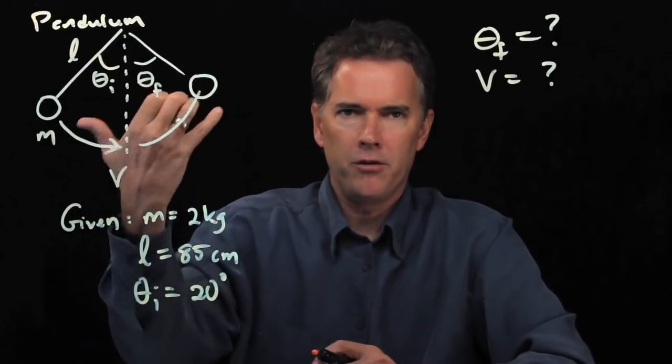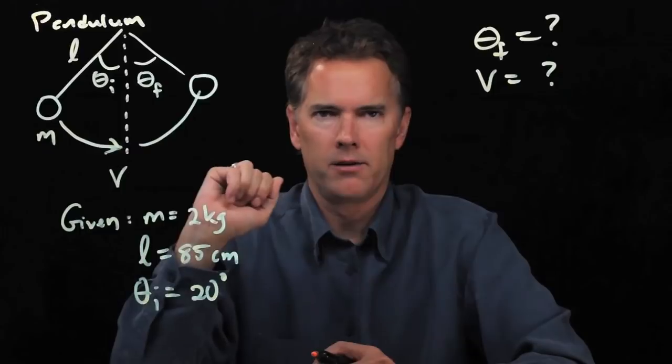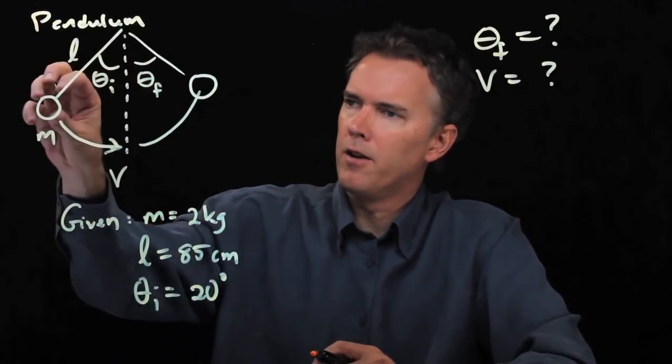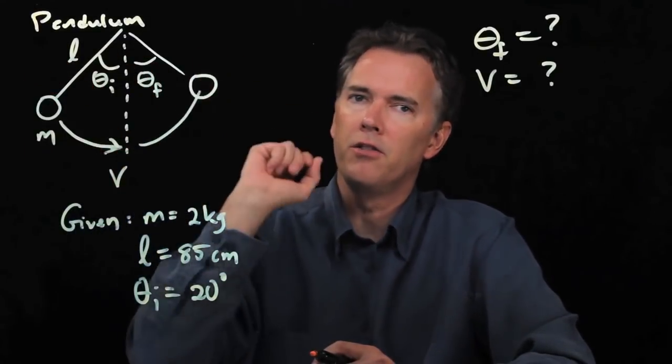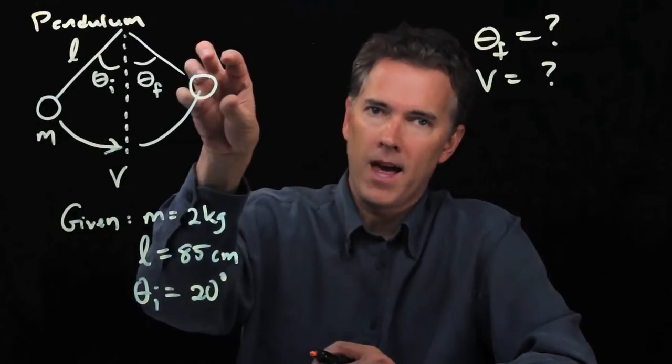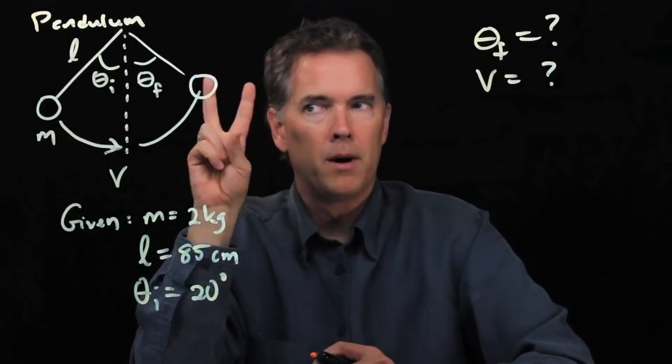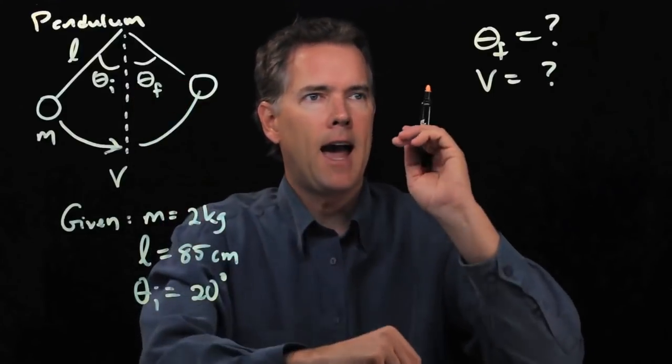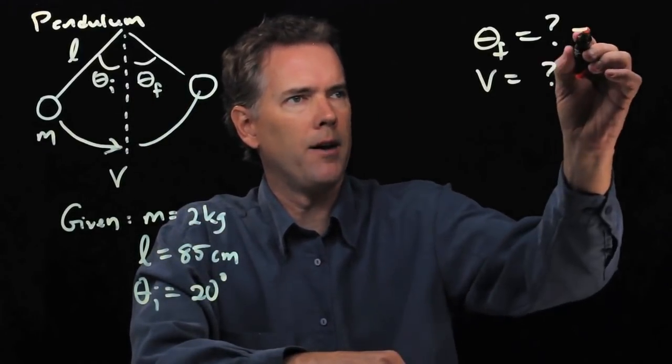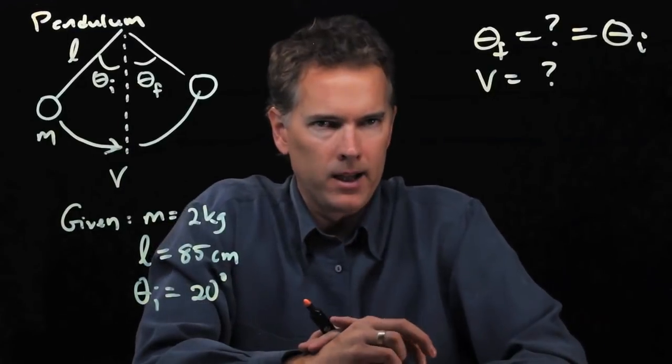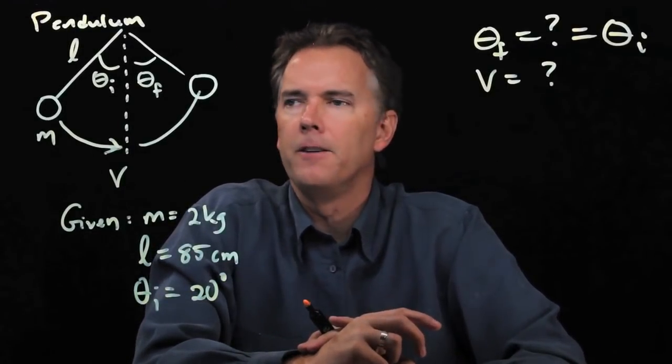is because if I reverse the problem, it looks exactly the same. It doesn't matter if I start it from this side and let it swing to the other side, or if I start it from that other side and let it swing back to the first side. And so, by symmetry, theta f has to be equal to theta i. We can prove that later on using conservation of energy.